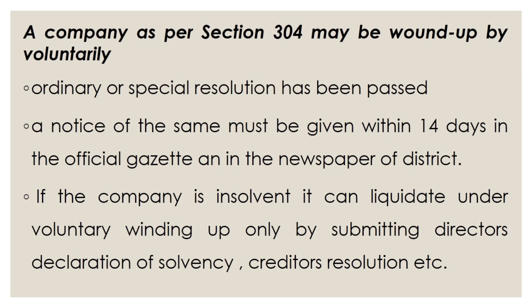The notice of the ordinary or special resolution must be given in the official gazette or in the newspaper of the district within 14 days. Third, if the company is insolvent it can liquidate under voluntary winding up only by submitting a director's declaration of solvency, creditors' resolution, etc. The voluntary winding up happens only when the company is solvent. In the case where the company is insolvent, they can liquidate but they must submit a director's declaration of solvency and creditors' resolution.